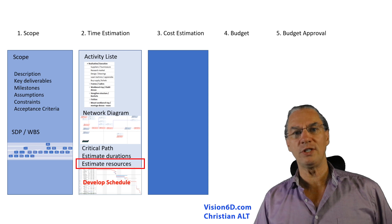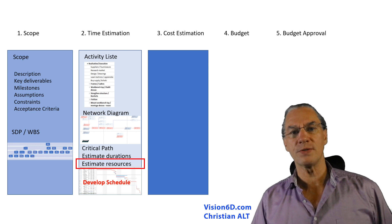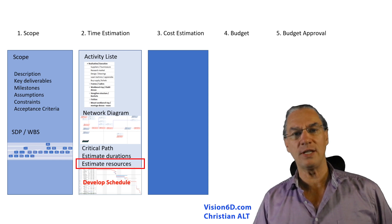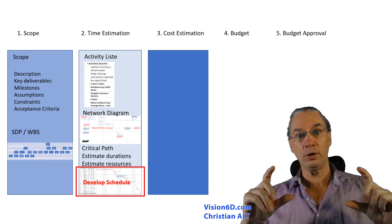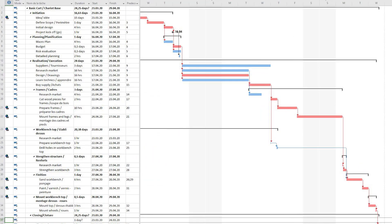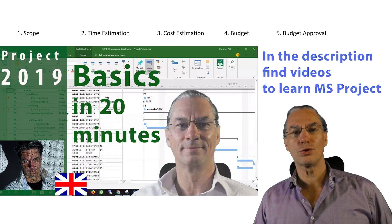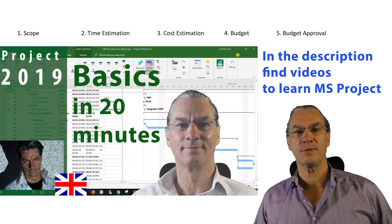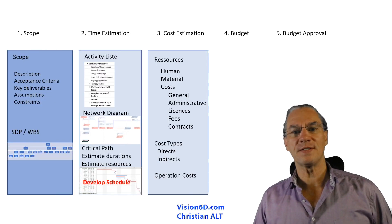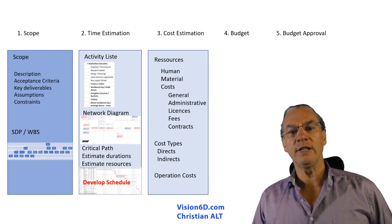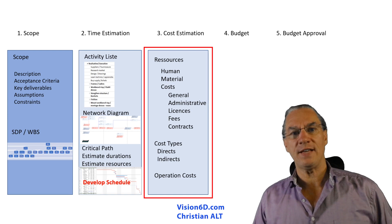We will also need to define the resources required for the project. Once we have all those elements, we are able to develop the schedule. The tool I use to develop the schedule is MS Project — Microsoft Project. Once this is done, we can move on to cost estimation.